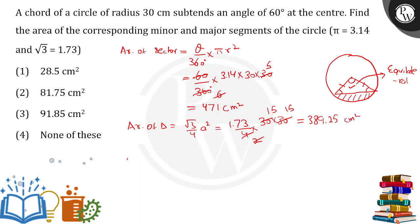From here, I can calculate the area of the minor segment. Area of the minor segment will be the subtraction of these two things we calculated: 471 minus 389.25. Doing the subtraction, 471 minus 389.